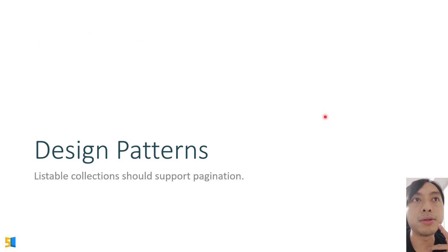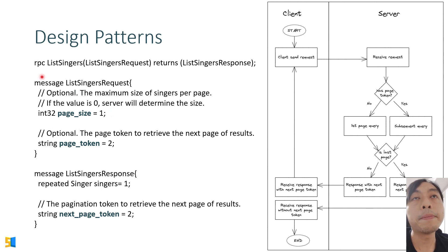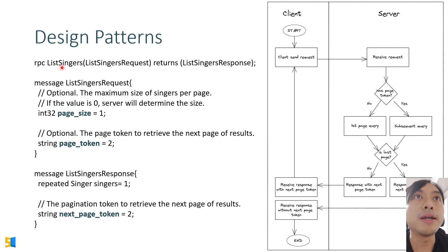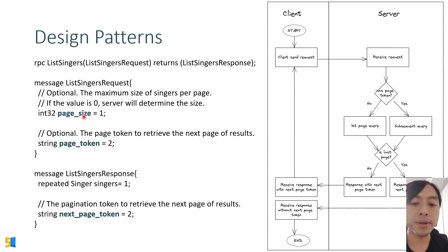Now let's discuss design patterns. Listable collections should support pagination. In gRPC, for an RPC like ListSingers, the request has two important fields: page_size, which determines the maximum number of items returned per page, and page_token, which is used to retrieve the next page of results.